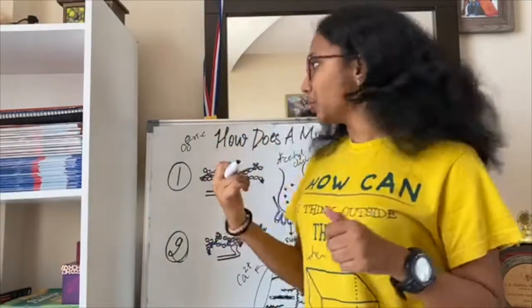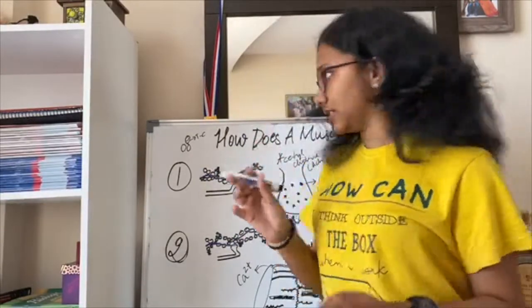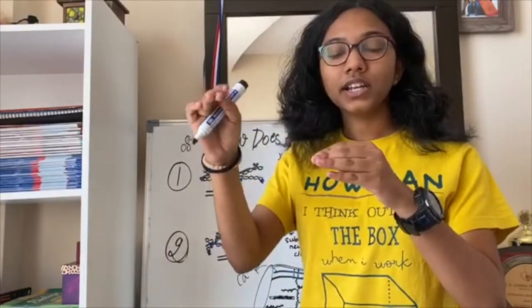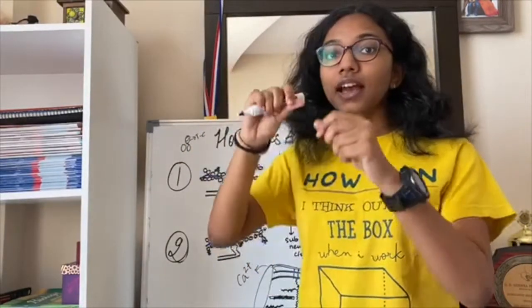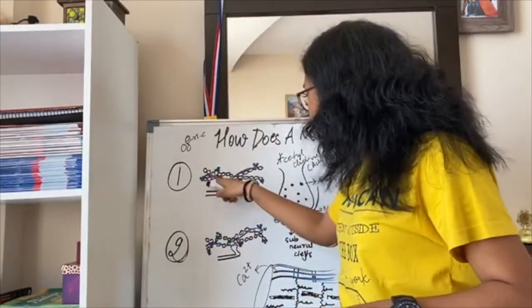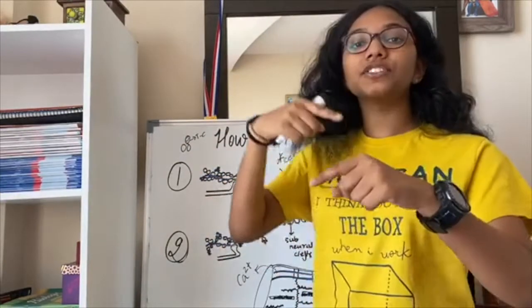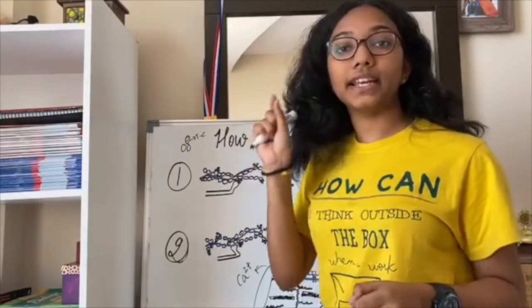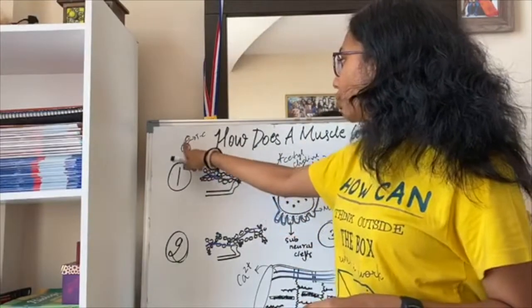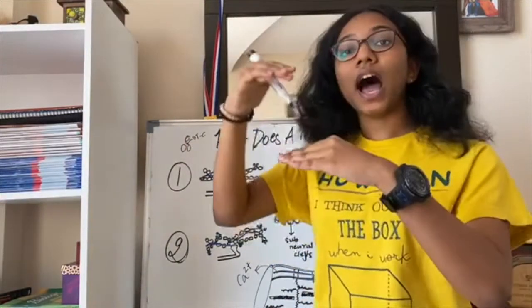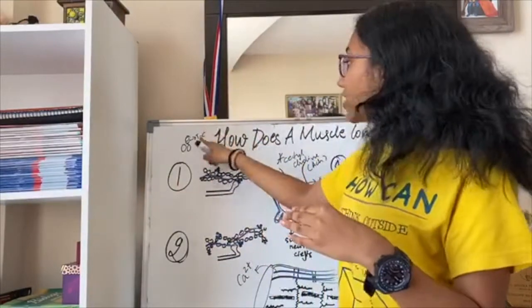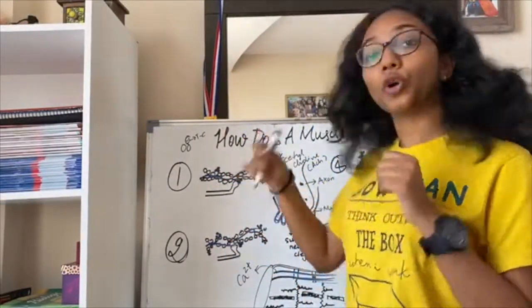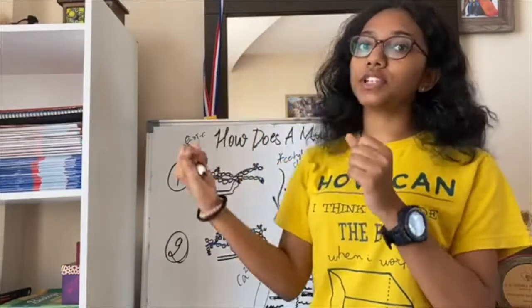So when it binds to troponin C, that causes some structural changes and the troponin T which is attached to the tropomyosin, it shifts in such a way and the tropomyosin that is this blue band that you can see here, tropomyosin also changes in such a way that it exposes the myosin binding site. So basically, this troponin and tropomyosin, they hide the myosin binding site but when calcium ion gets binded to troponin, it changes the structure of tropomyosin and that will expose the myosin binding site.